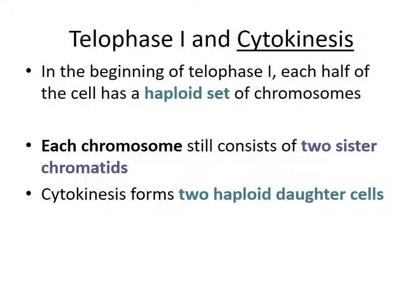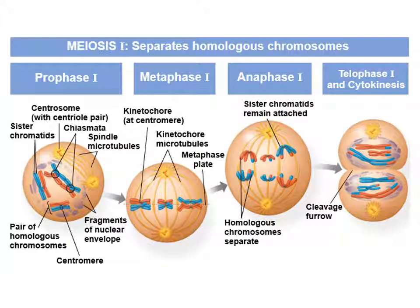At the beginning of telophase 1, each half of the cell has a haploid set of chromosomes. We've pulled the homologues apart, so we still have sister chromatids making up each chromosome, but the cell is technically haploid at this point. The new cells being produced are going to be haploid. The key point of meiosis 1 is that it separates the homologous chromosomes — this is when we technically go from diploid to haploid.